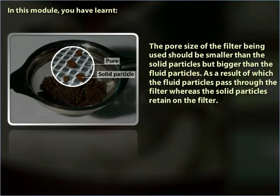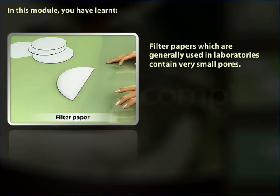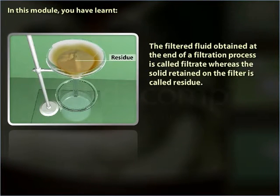In case the difference in size between solid particles and fluid particles is very small, then a filter with very small pore size is required. Filter papers which are generally used in laboratories contain very small pores. The filtered fluid obtained at the end of the filtration process is called filtrate, whereas the solid retained on the filter is called residue.